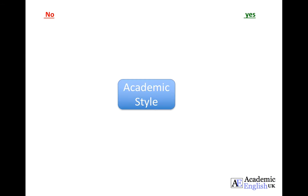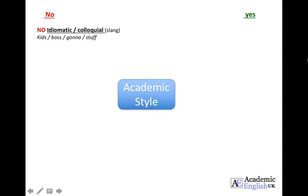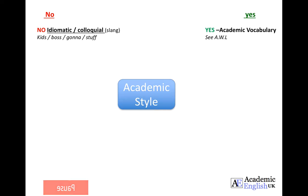Before we begin, I'd like you to think about what you should not do in academic writing and what you should do considering academic writing style. To give you an example: a 'no' would be that no idiomatic or colloquial language should be used, and a 'yes' would be that academic vocabulary should be used, such as the academic word list. Pause this slide and see if you can think of four or five no's and four or five yes's.